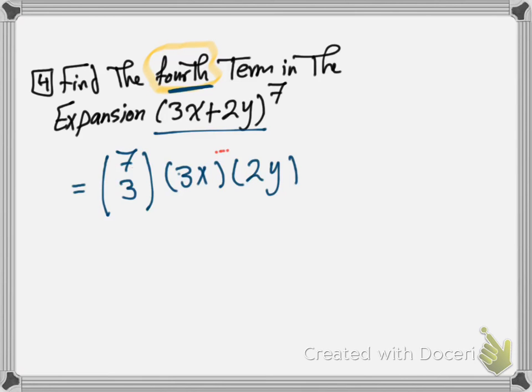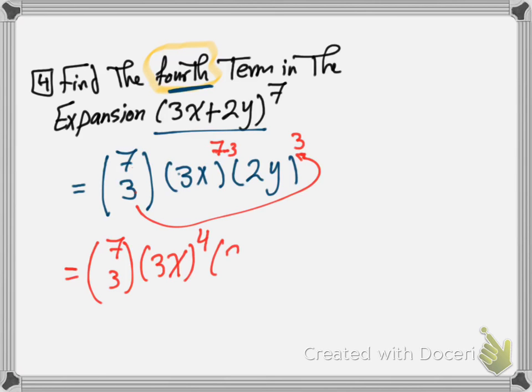Then I need to decide what is the power for the first case. Here the power is 7 minus 3. For the second case, the power is at the base of the coefficient, which is 3. So it's 7 above 3, times 3x to the power 4, times 2y to the power 3. 7 above 3 is 7 times 6 times 5 divided by 3 times 2 times 1.